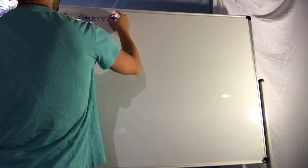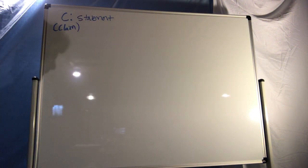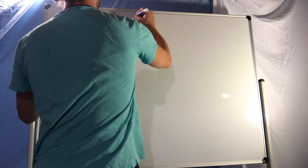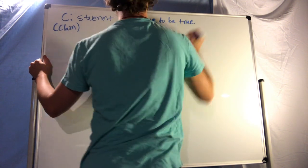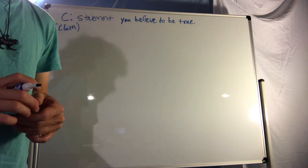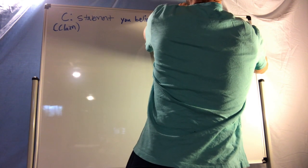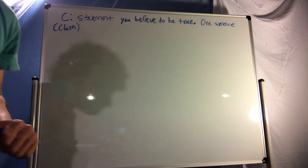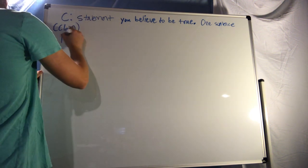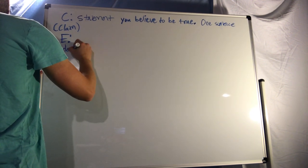Let's start with C. C stands for Claim. It's a statement you believe to be true, and it's only going to be one sentence in your CER conclusion — just one sentence.